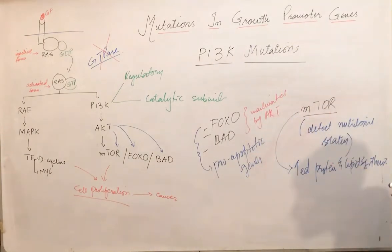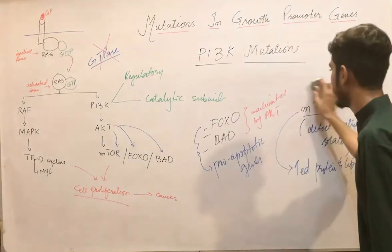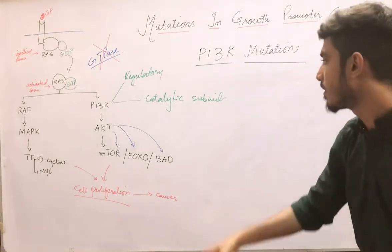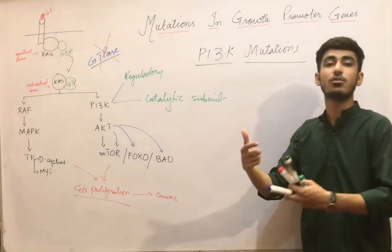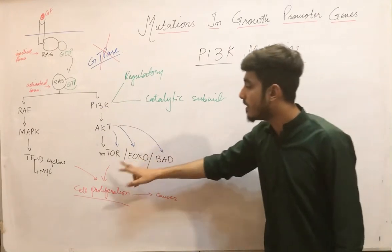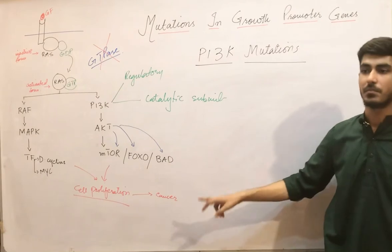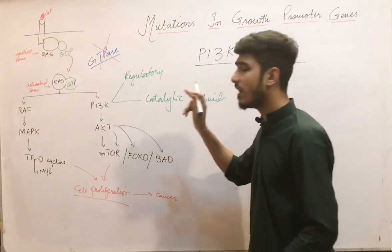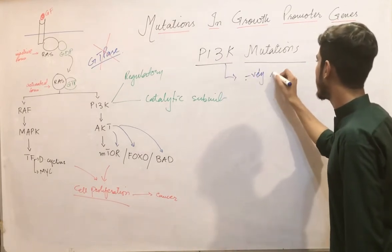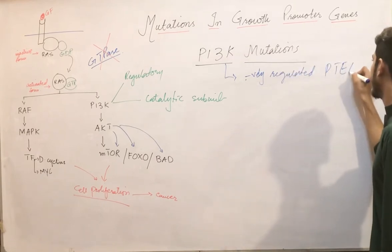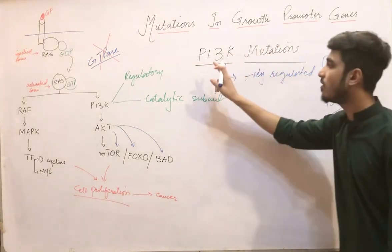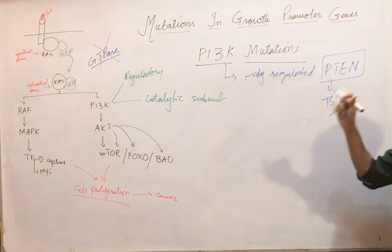When there is a gain-of-function mutation in AKT, it over-activates mTOR, increasing protein and lipid synthesis, inhibiting apoptosis, leading to over-proliferation and cancer. PI3K is also negatively regulated by a gene called PTEN, which is a tumour suppressor gene.